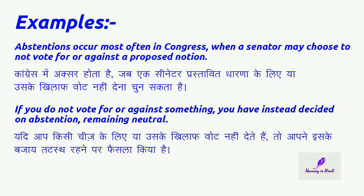Examples: Abstentions occur most often in Congress, when a senator may choose to not vote for or against a proposed notion. Congress में अक्सर होता है, जब एक senator प्रस्तावित धारना के लिए या उसके खिलाप वोट नहीं देना चुन सकता है. If you do not vote for or against something, you have instead decided on abstention, remaining neutral.